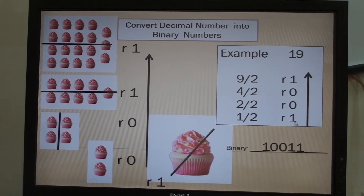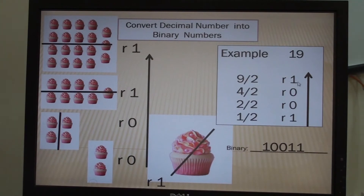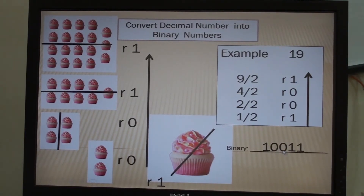The answer will be written from below to the top: 1, 0, 0, 1, 1. So the decimal number 19 in binary is 10011. That's it.